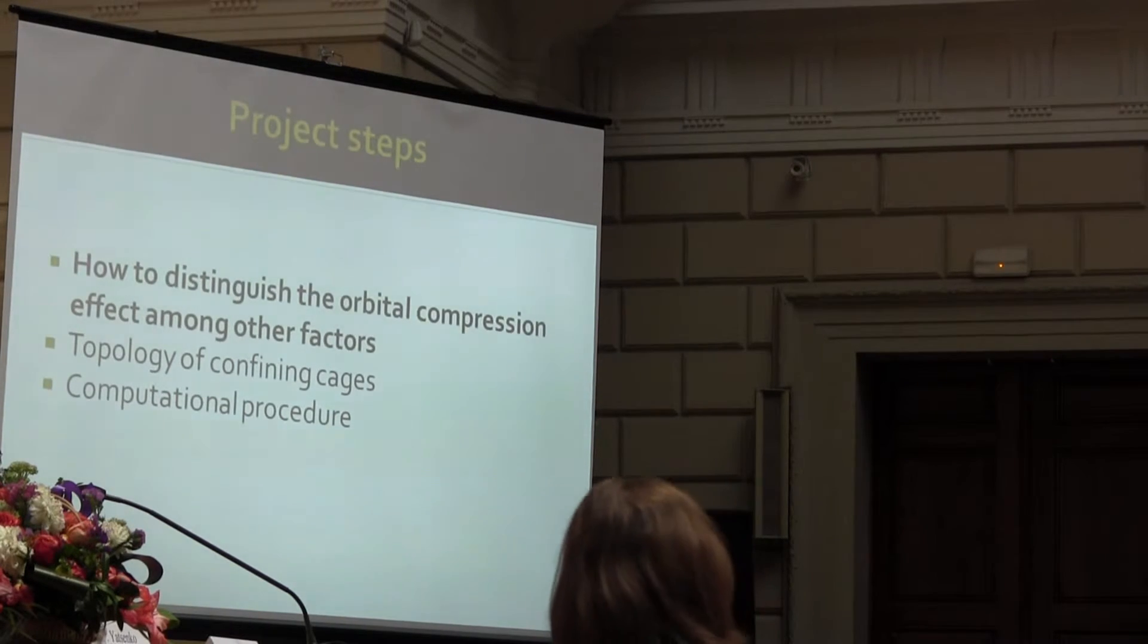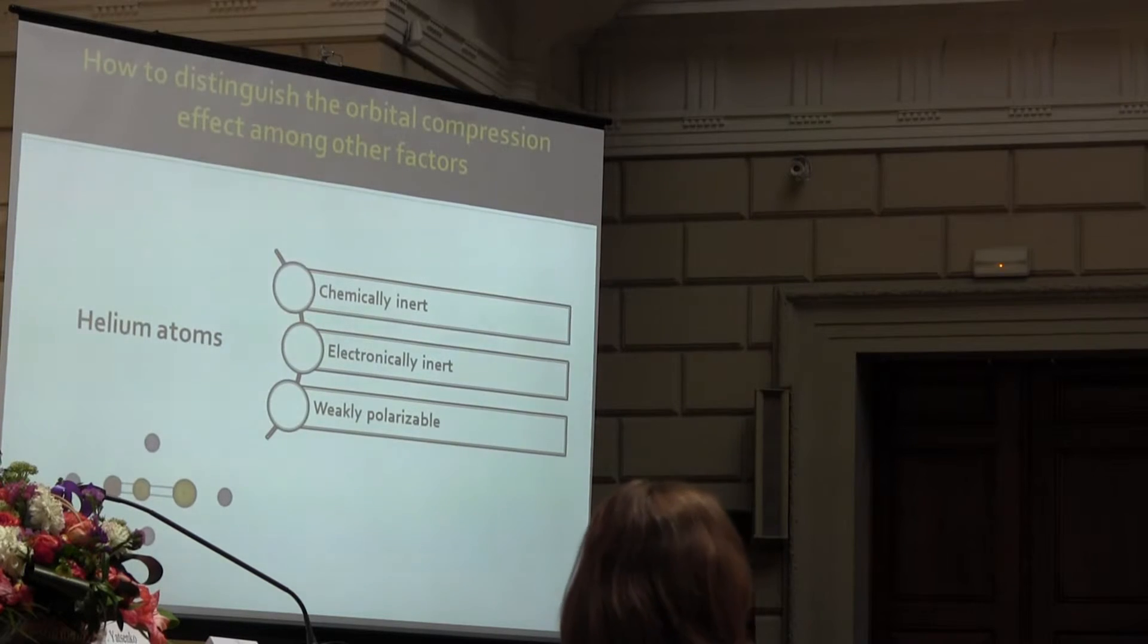The first step was to distinguish the orbital compression effect among other factors which are included in supermolecular approximation. In order to do that I used helium atoms. They are chemically and electronically inert and hardly polarizable, so they are quite suitable to model the effect of orbital compression.